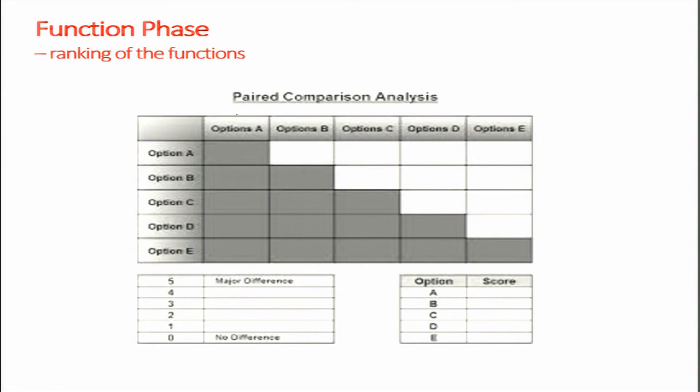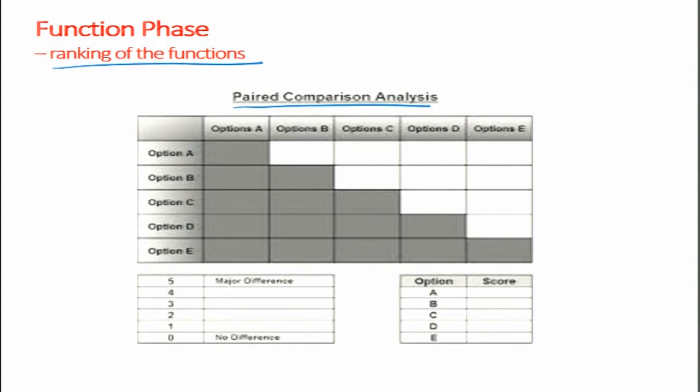To verify the FAST diagram, we can use paired comparison analysis — ranking of the functions. Functions ranked higher should be on the left side. The highest-order function should be the highest-ranked and the lowest-order function the lowest-ranked, with intermediate ranks arranged accordingly. If the ranking does not match the diagram structure, we should rework the FAST diagram.